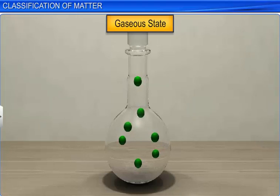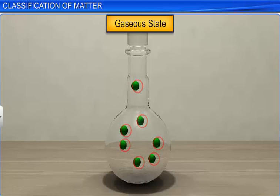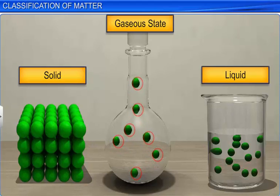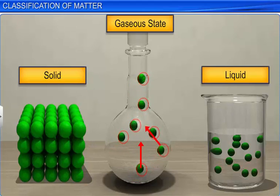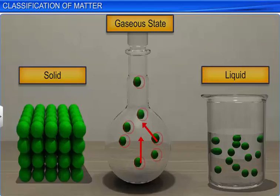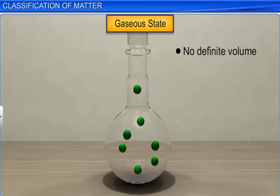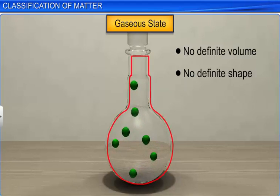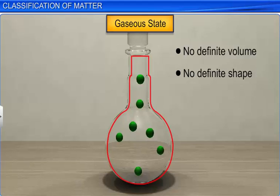In gaseous state, the particles are far apart, as compared to those present in liquid states. Therefore, their movement is easy and fast. They have neither definite volume, nor definite shape. And they occupy the available space of the container in which they are placed.